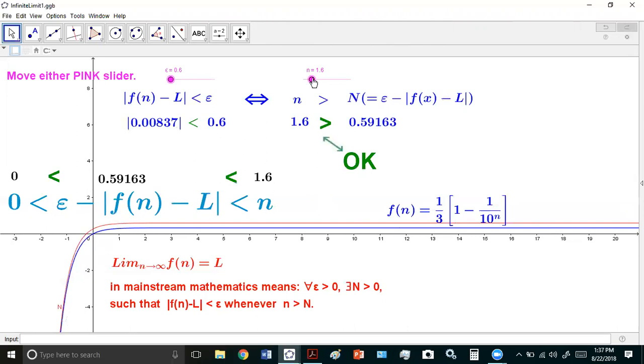For example, you need to have for every epsilon greater than zero, there must exist an N greater than zero, such that this distance is less than epsilon whenever n is greater than big N. So we can make this n as big as we like, but it mustn't be smaller than the N that we choose to satisfy this inequality.